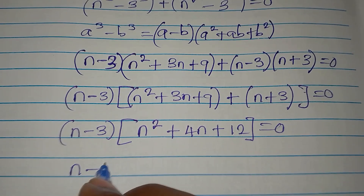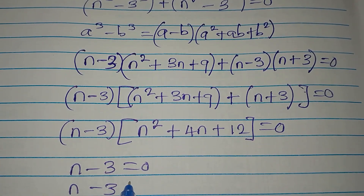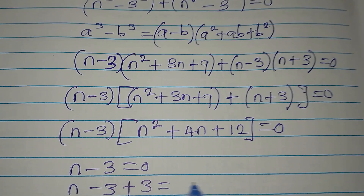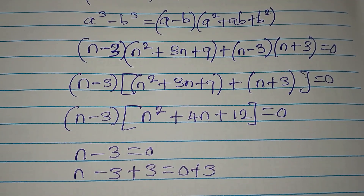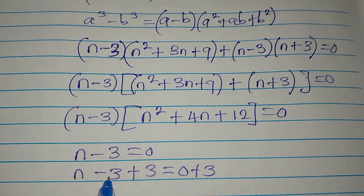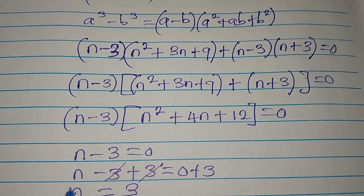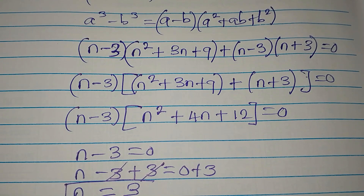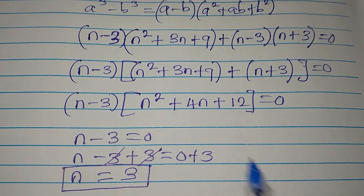From here, it is either n minus 3 equals zero or the quadratic equals zero, because we are multiplying both of them to get zero. For n minus 3 equals zero: adding 3 to both sides gives n equals 3. This is one of the solutions.